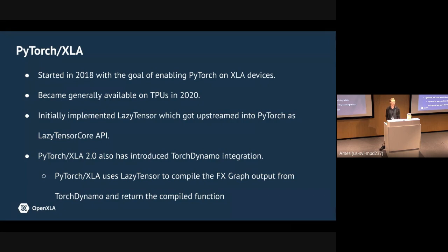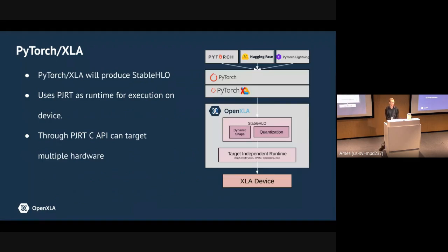To overcome the limitations of lazy tracing, we wanted to combine PyTorch 2's Torch Dynamo front end with the lazy tracing system. Shaheen developed a backend for Torch Dynamo that takes the FX graph produced by Dynamo, produces the forward and backward graph, and runs that through lazy tracing to lower to XLA. This has the advantage that it basically works with all the features of PyTorch XLA but removes all the latency of tracing after the first time. PyTorch XLA will produce stable HLO, is adopting PJRT as the runtime, and has a C API targeting multiple hardware.